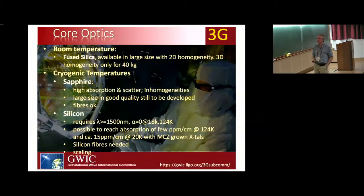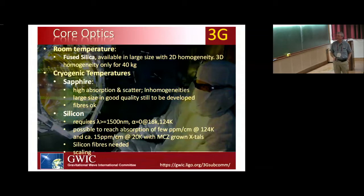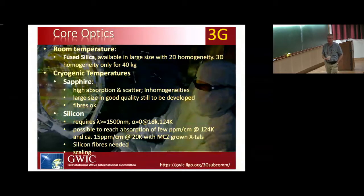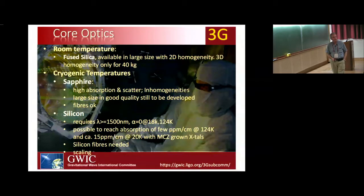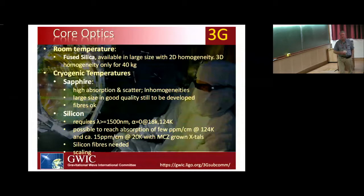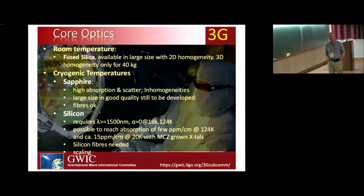For core optics we have three possibilities, possibly operating at three different temperatures. At room temperature, fused silica is the only material of choice — it's well understood; if nature hadn't presented fused silica we wouldn't be detecting gravitational waves. But it's only been developed up to 40 kilograms; going to large blocks of fused silica still requires development in 3D homogeneity. KAGRA is using sapphire at around 20 kelvin; sapphire still has high absorption and scatter, inhomogeneities, and sapphire fibers would need to be developed — lots of research needed there even though sapphire is currently used in KAGRA.